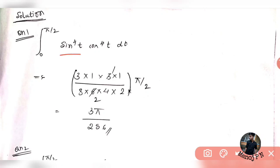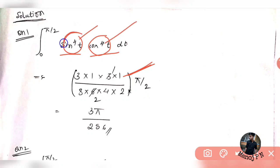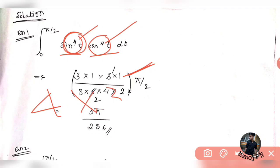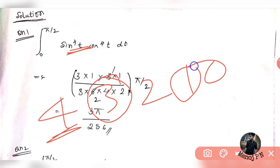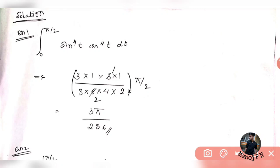So here, there are 2 functions. First function, the power is 4; and second function, the power is also 4. So I am going to write the odd upcomings of both the powers. For the first power, the odd upcomings series starts at 4: the odd numbers before it are 3 and 1. So 3 and 1 — these are my odd upcomings of 4. So 3 and 1, I am going to multiply and write as 3 into 1.